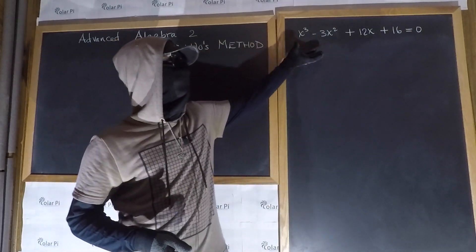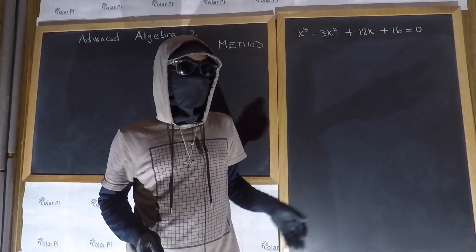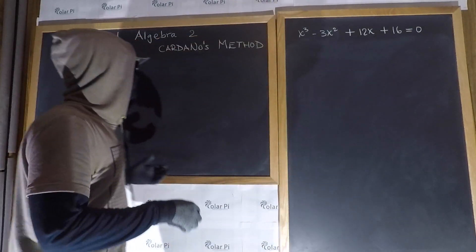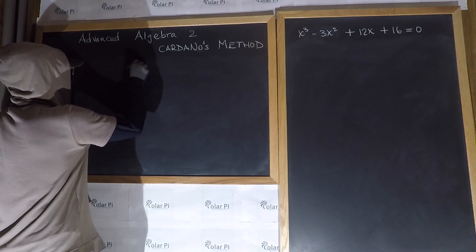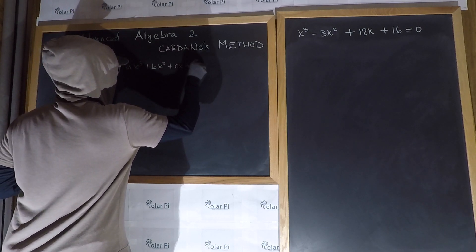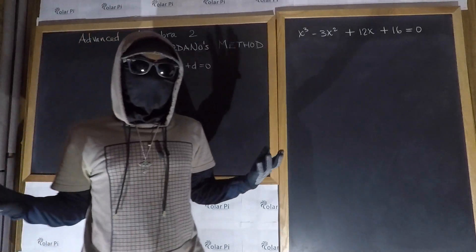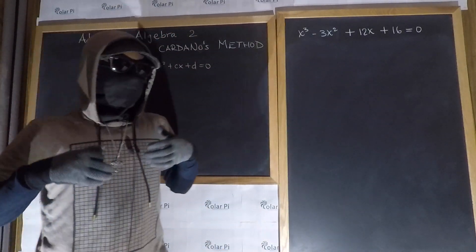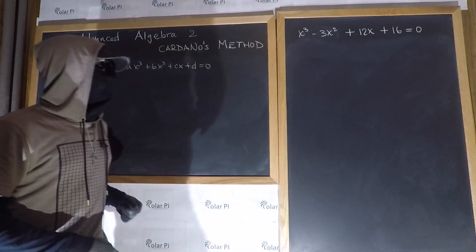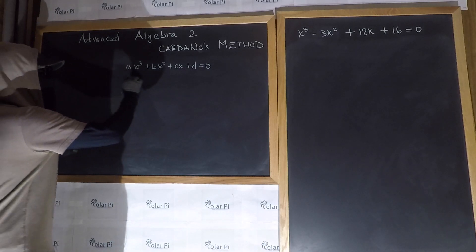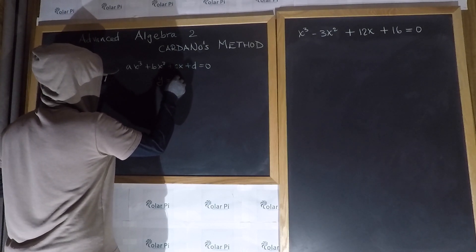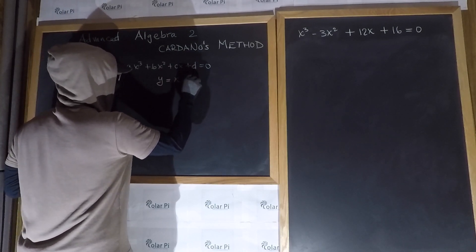For example, to start, what we're going to do here is depress the given cubic. When we derive the cubic formula, that's the first thing that we did — we took a standard cubic written in the form ax³ + bx² + cx + d = 0 and we depressed it. So again, when we do Cardano's method, just like what we did in the derivation of the cubic formula, we have to start to depress the cubic. Every cubic written in this form can be depressed by making the substitution y = x + b/(3a).